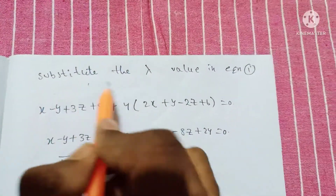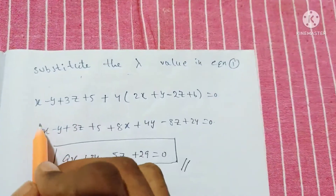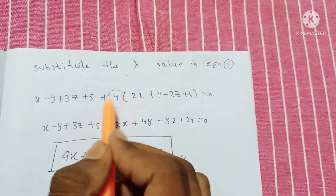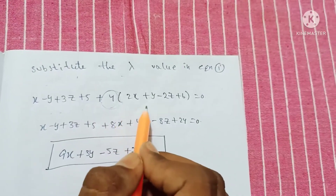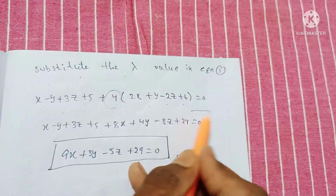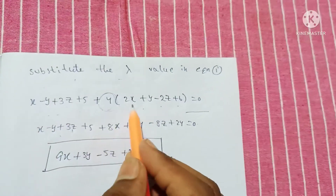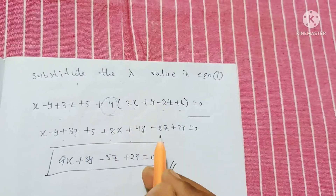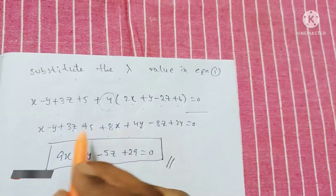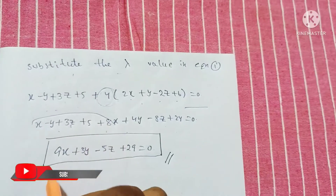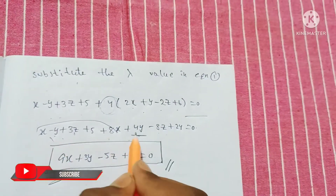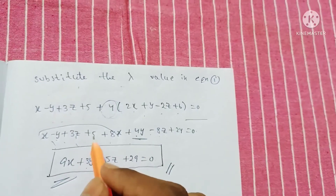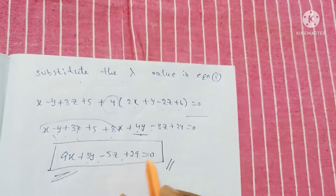Substituting λ equals 4 into equation 1: x minus y plus 3z plus 5 plus 4 times (2x plus y minus 2z plus 6) equals 0. Expanding: x plus 8x gives 9x, minus y plus 4y gives 3y, 3z minus 8z gives minus 5z, and 5 plus 24 gives 29. Therefore the equation is 9x plus 3y minus 5z plus 29 equals 0.